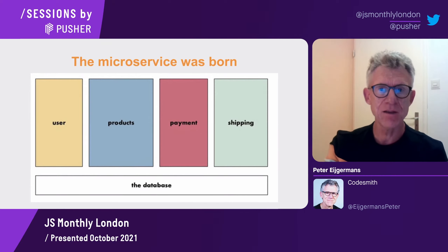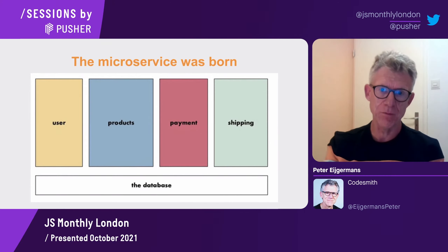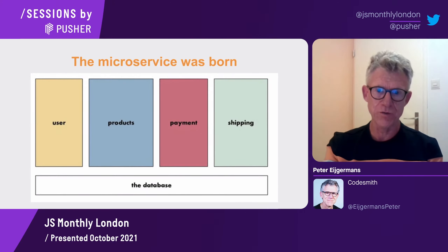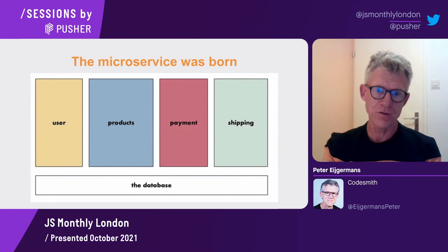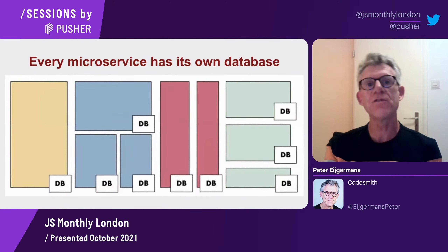But when you change something in one of the layers, you have a ripple effect. When you change something in the business layer, you sometimes have to change a lot of things in the frontend and in the database layer, etc.